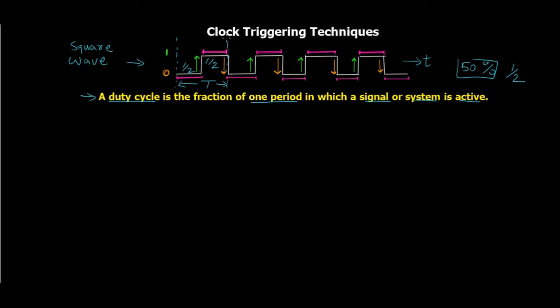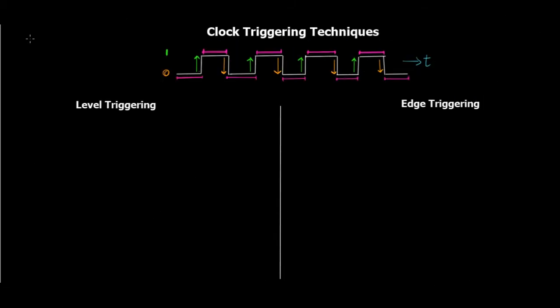Now let's start with the different clock triggering techniques. We have two main types: level triggering and edge triggering, each with further subcategories.